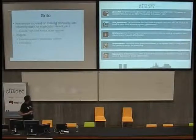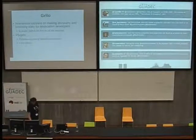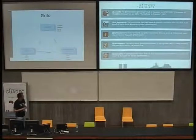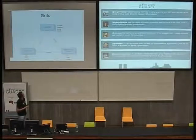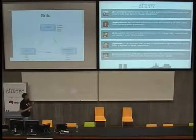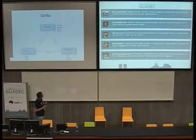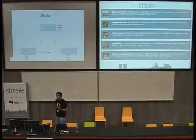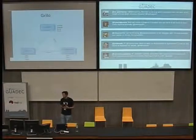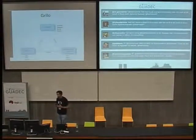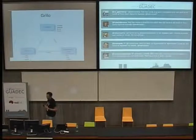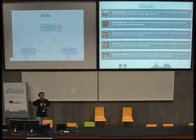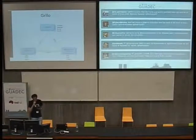Let me review the main concepts of Grilo. There are three concepts involving how Grilo works. The first one is the source — sources are basically the source of information, for instance YouTube, Jamendo, or your IMDB database. It's the wrapper that gets access to the content or information that is out there.